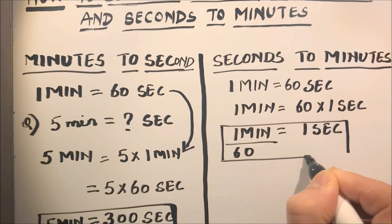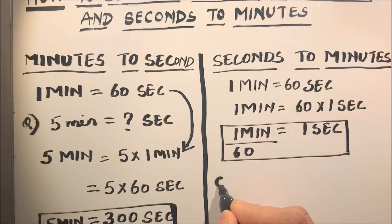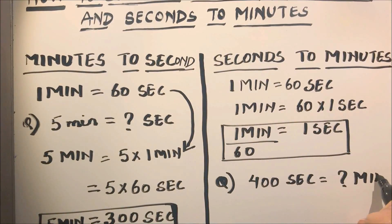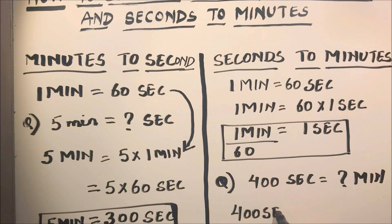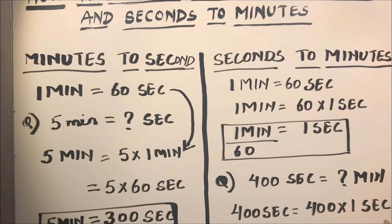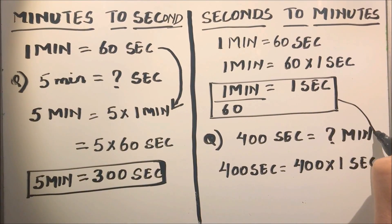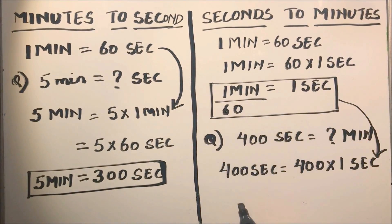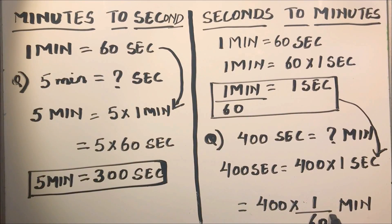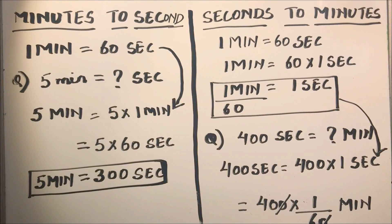We are going to use this relation to convert seconds to minutes. If the question is to convert 400 seconds to minutes, we write 400 seconds as 400 times one second. In place of one second, we substitute one over 60 minutes, giving us 400 times one over 60 minutes.